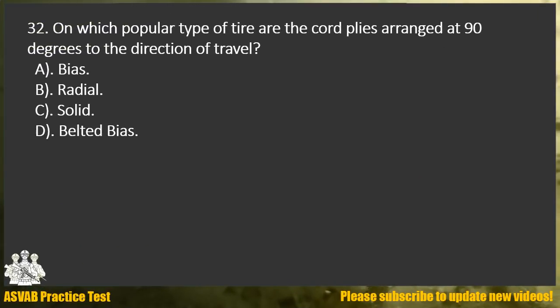Question 32. On which popular type of tire are the cord plies arranged at 90 degrees to the direction of travel? A. Bias. B. Radial. C. Solid. D. Belted bias.